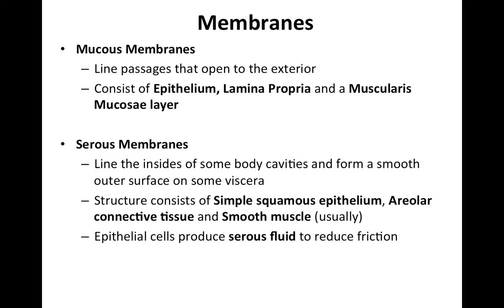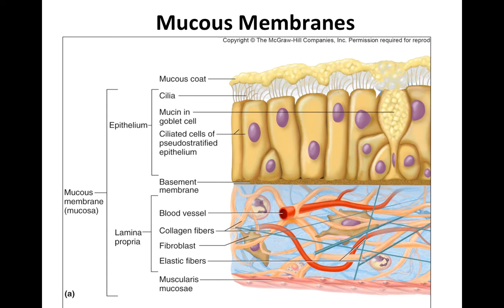There are three main parts to a mucous membrane. You have the epithelium, which will line the lumen; the lamina propria, which is the connective tissue directly underneath; and then the muscularis mucosa. Here is a mucous membrane image — you can see there's a decent amount of mucus being produced thanks to this goblet cell right here.